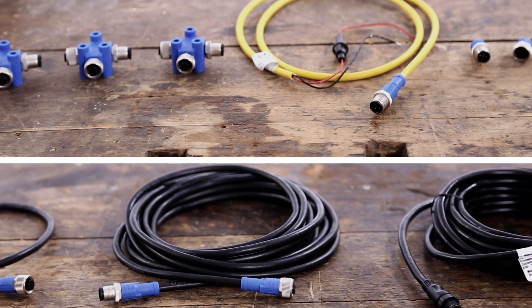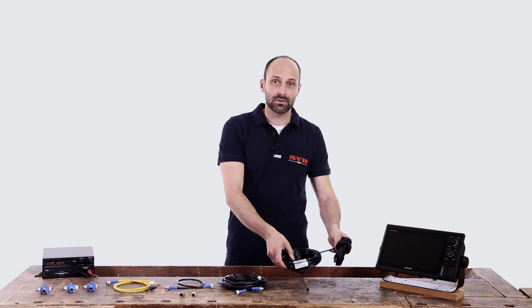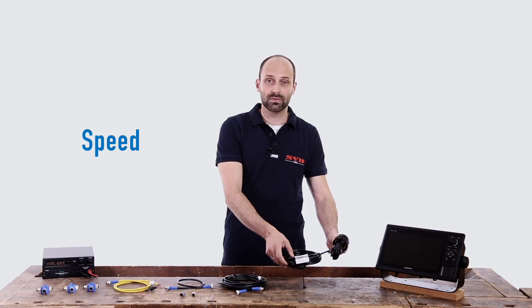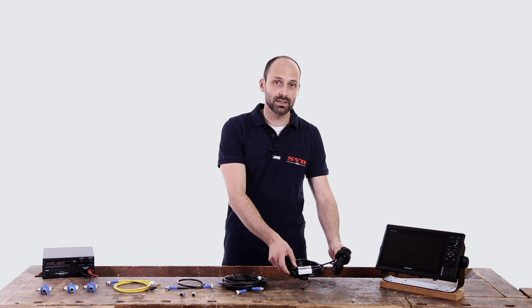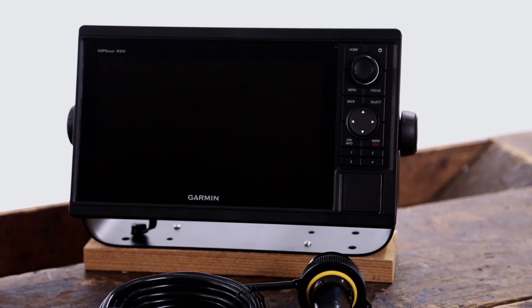We will now show you how to create a basic NMEA 2000 network. Our network consists of an NMEA 2000 starter kit, an AMAR DST 800 NMEA 2000 transducer to give us depth, speed and temperature data, as well as a device for displaying data received, in this case a chart plotter.